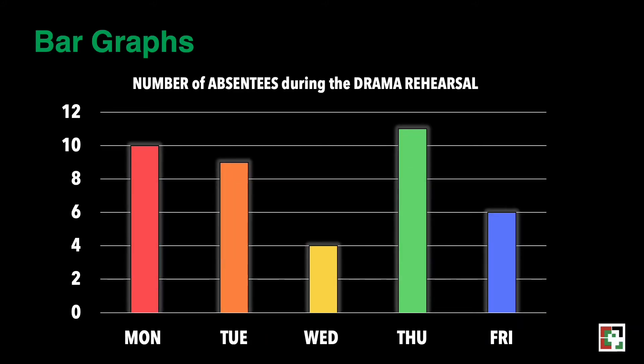Let us have some examples. I have here a table showing the number of absentees during the drama rehearsal. Based on the bar graph, we can conclude the following. First, more students were absent during the drama rehearsal on Thursday.